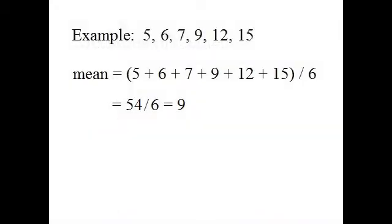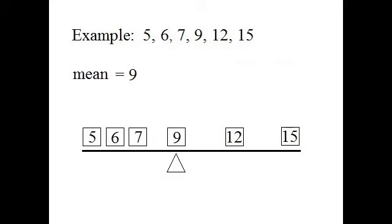Let's look at an example. Let's say I have these six numbers. To find the mean, I add them together and I divide by the number 6, and find that the mean, or the average, is 9. But what does that mean exactly? What is an average? The average, or the mean, is really the place where the data set balances. Imagine a number line where every number on the line gets a weight, and if I want to make this a teeter-totter, I want to find the place where that will balance. That's the mean.